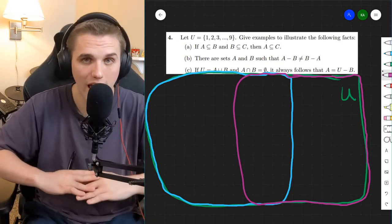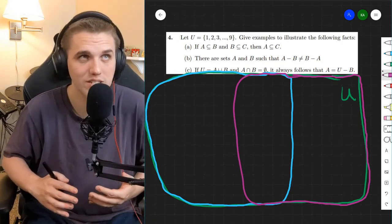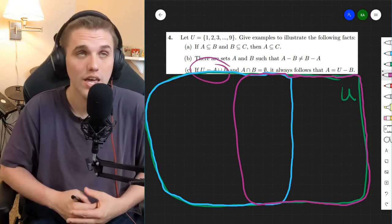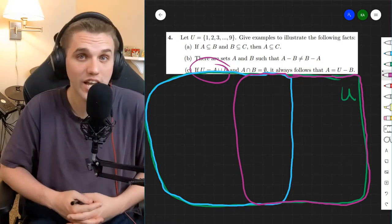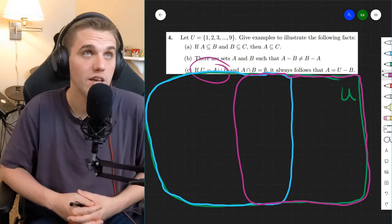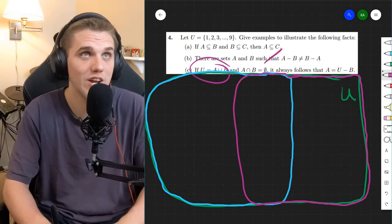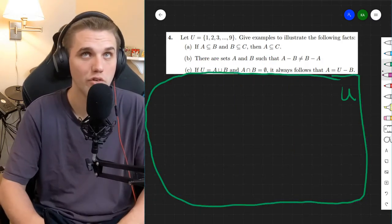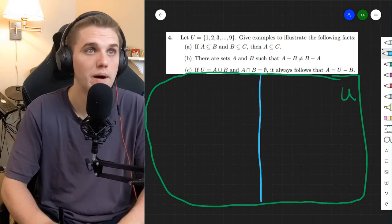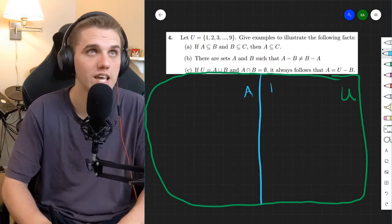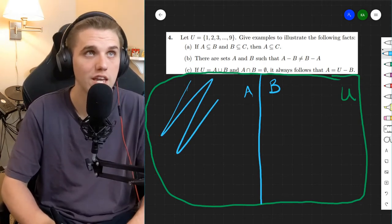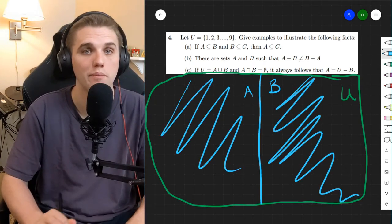And in this picture, because if we're just given that the universe is A union B, then that doesn't necessarily mean that the intersection is non-empty. But this says specifically that the intersection is empty, which means that I can actually draw my universe by splitting this into two sets, A and B, that are disjoint, completely disjoint. But everything in A plus everything in B make up all of the universe.